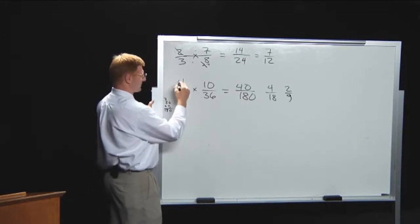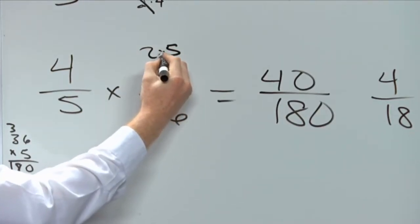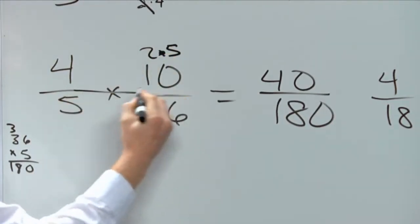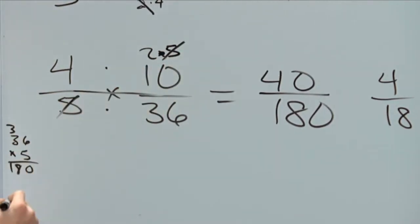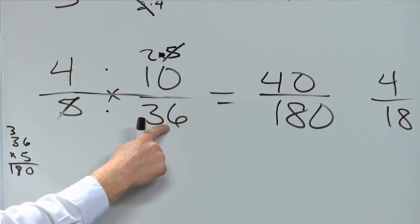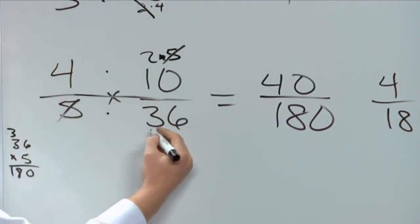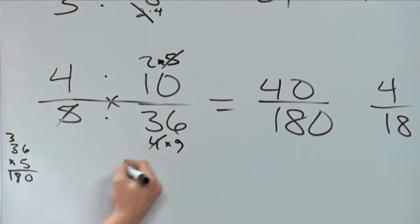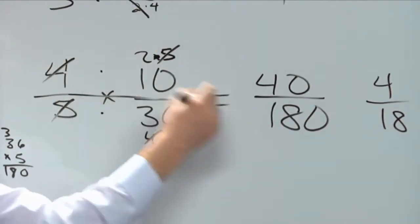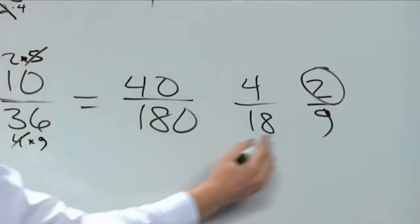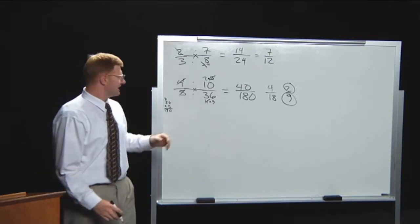We can simplify ahead of time. Look at how valuable this is on a problem with really big numbers. Ten is two times five, so these fives can cancel. And in thirty-six, is there anything that goes with that four? Yes — thirty-six is four times nine, so the fours cancel. Now we have two-ninths, and we didn't even have to do the multiplication. Being able to cancel ahead of time is really valuable with fractions.